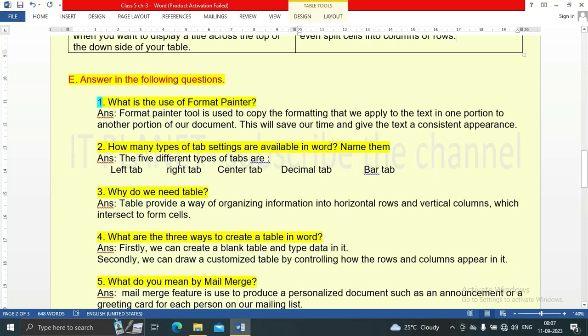Why do we need tables? Tables provide a way of organizing information into horizontal rows and vertical columns which intersect to form cells. What are the three ways to create a table in Word? Firstly, we can create a blank table and type data in it. Secondly, we can draw a customized table by controlling how the rows and columns appear in it.